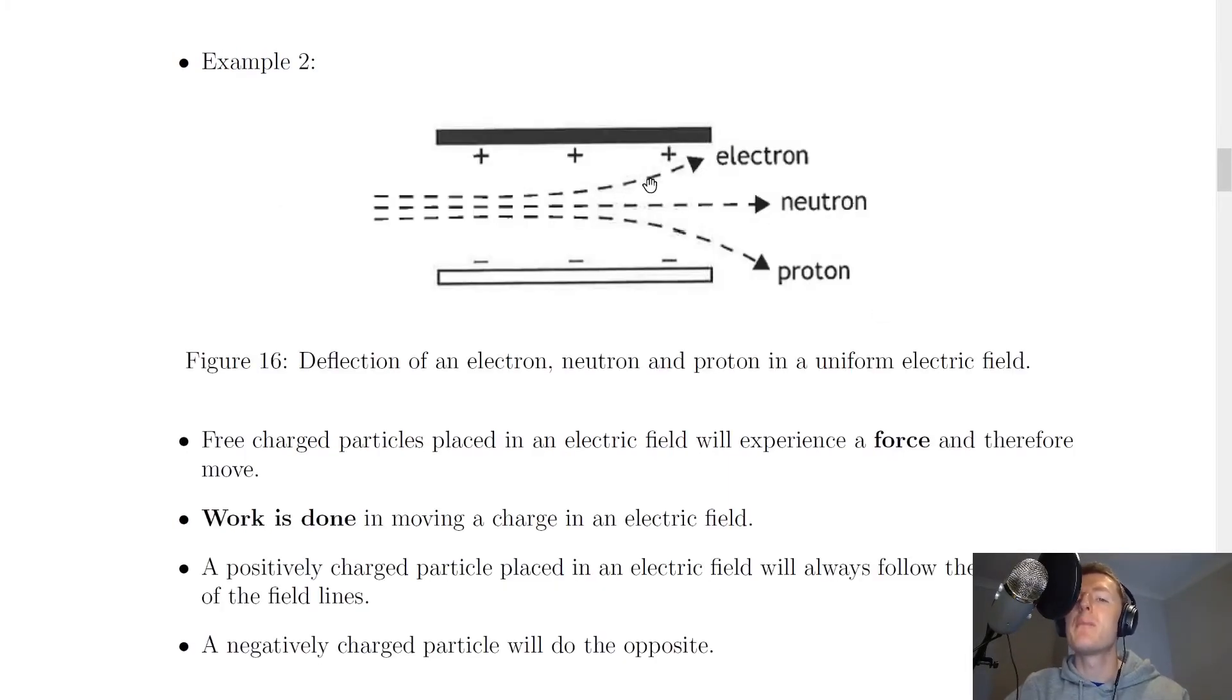The second example here shows you electrons, protons and neutrons. So if we again have two oppositely charged parallel plates, this time we're not drawing the field lines downward because they would get in the way of these lines and it would just look a bit messy, but just know that they would be pointing downward.